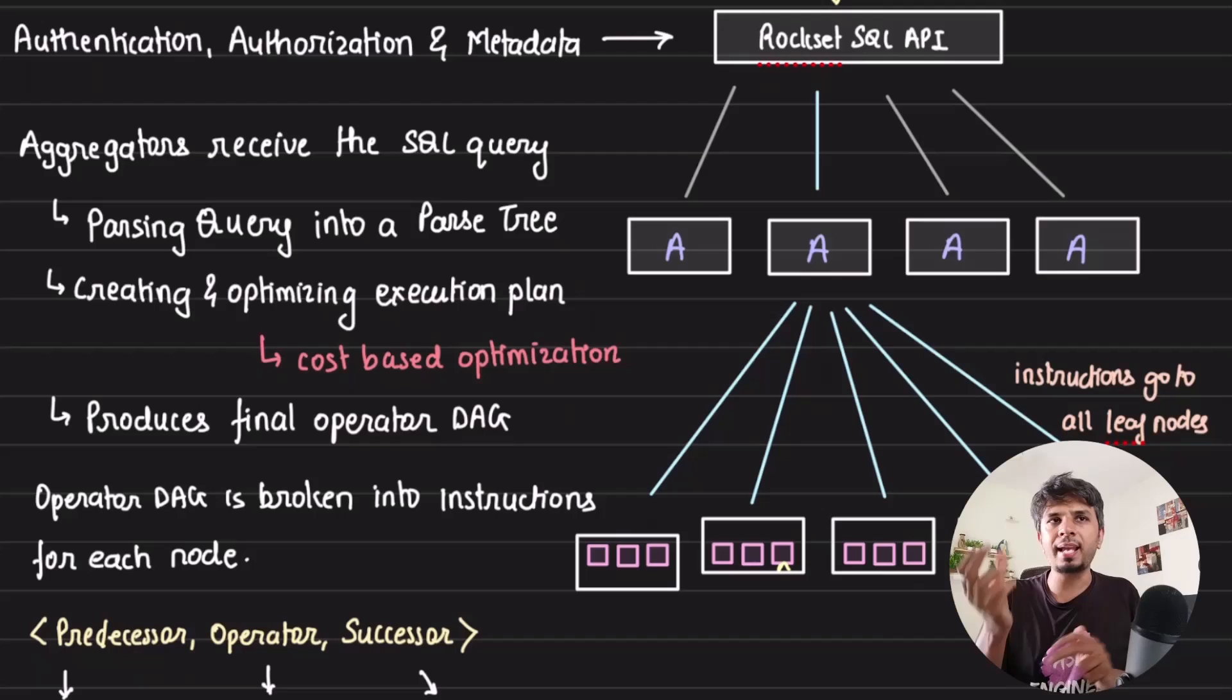What is this operator DAG? DAG is basically a directed acyclic graph. So what it does is it says for each node what it needs to do. That's what operator DAG is.